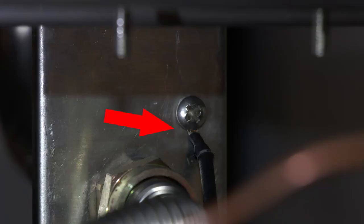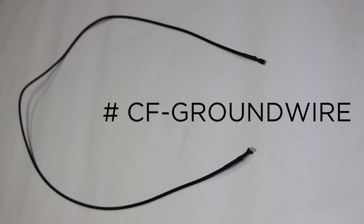If the black ground wire is not connected or loosely connected, you will still hear the spark but the spark will not be present in the igniter area. Tighten the connection or order a new ground wire, part number CF-GroundWire at OutdoorRooms.com.